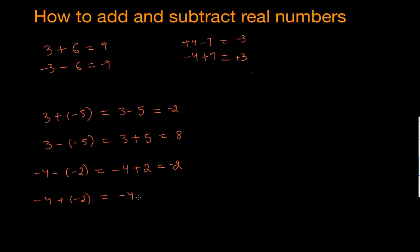Last example: negative 4 plus negative 2. A positive times a negative gives negative, so both have the same sign. We add them: 4 plus 2 gives 6, and since both numbers are negative the answer is negative 6. I hope this helps — share the video with your friends, subscribe to the channel, thank you, have a good day!